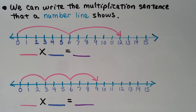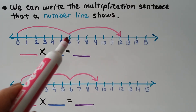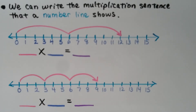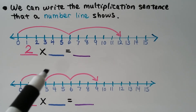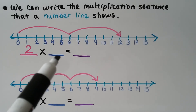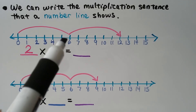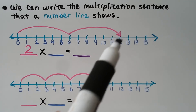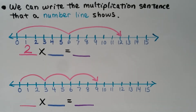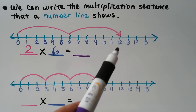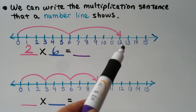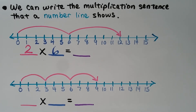We can write the multiplication sentence that a number line shows. Our first number is going to be how many jumps. We've got six and then it jumps to twelve, so we know there's six in each jump. We can see it landed on twelve, so our product is twelve. This number line shows two times six is equal to twelve.